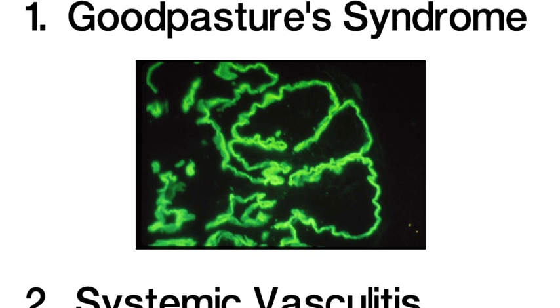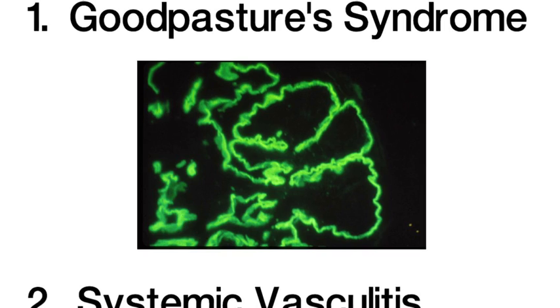Other important causes include both the variety of systemic vasculitides, as well as TTP and HUS. So I hope this whirlwind tour of the kidney has given you a good overview.